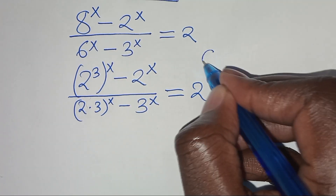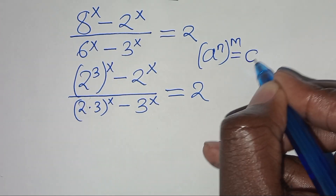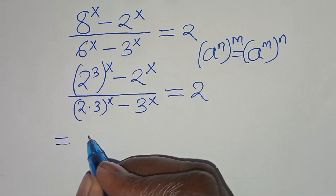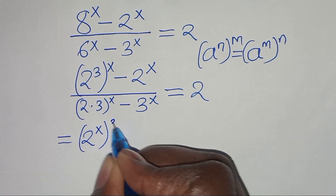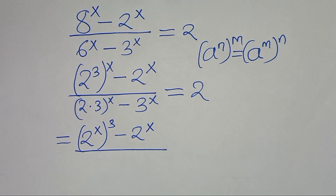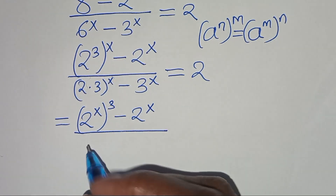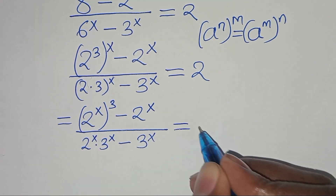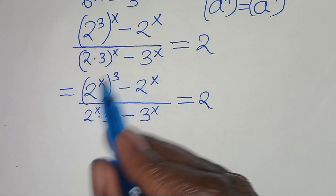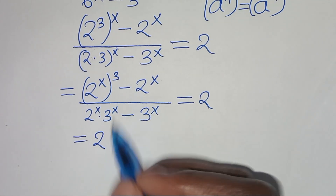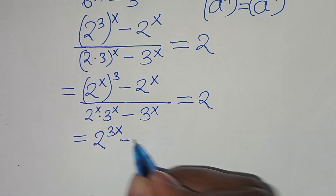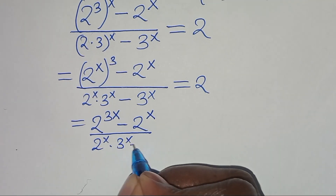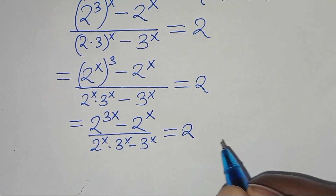Now 2^(3x) is in the form a^(nm) which we can express as (a^m)^n. Applying this exponent property we get (2^x)^3 minus 2^x in the numerator. For the denominator, 2 times 3^x can be expressed as 2^x times 3^x, then subtract 3^x. This all equals 2. So we have (2^x)^3 minus 2^x, divided by (2^x times 3^x minus 3^x), equals 2.